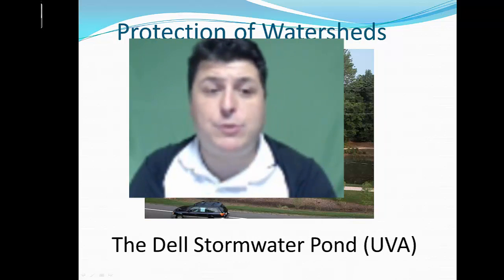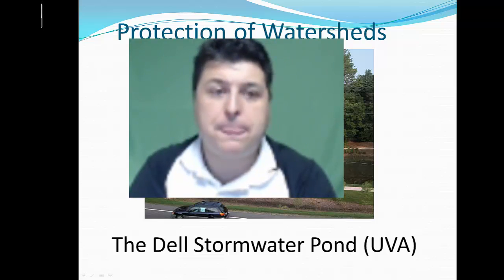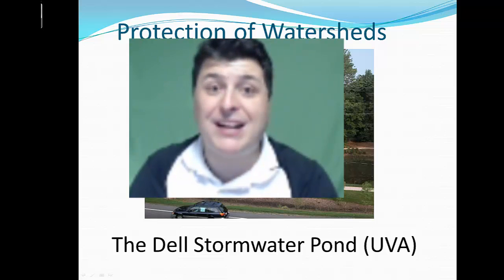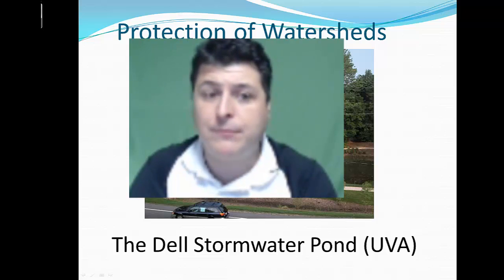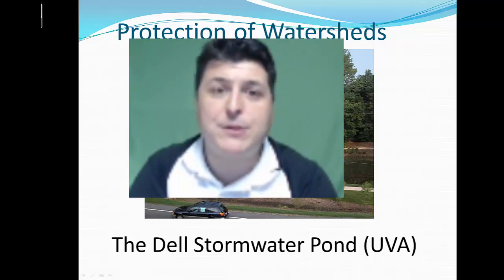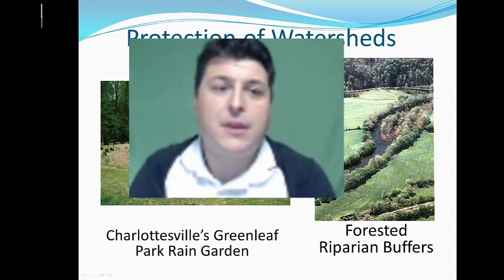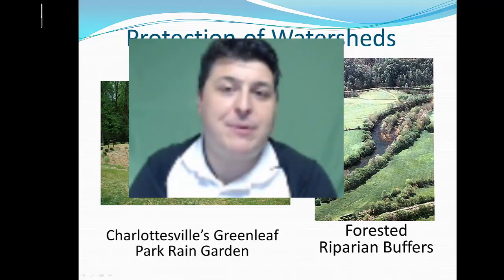Another way to protect a watershed is by implementing stormwater ponds. Stormwater ponds, like the Dell Stormwater Pond at UVA or the stormwater pond behind our own school, help decrease the flow of water, slowing how much water is leaving the land and thus decreasing erosion.